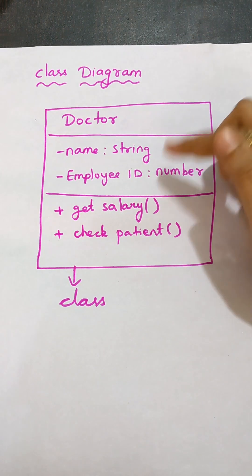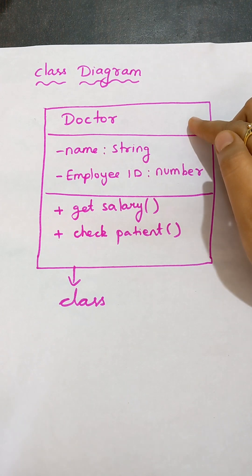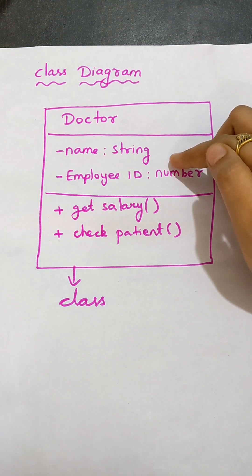I divide it into three parts. In the first part, I need to write the object name - whatever topic is given, what are all the objects included in that. If I take a hospital management system, the doctor plays an important role, so Doctor is an object.